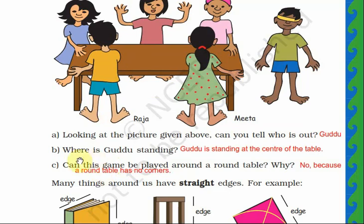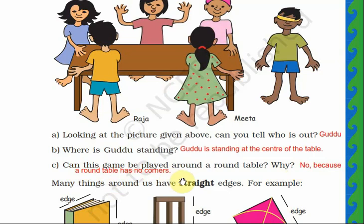Can this game be played around a round table? No, because a round table does not have corners. A round shape does not have corners. So you cannot play the game, because as per the rule the one who does not reach the corner of the table is out. It is not possible — write the answer: no, because a round table has no corners.